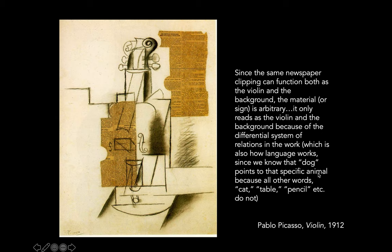So you know these are cut from the exact same newspaper page. But you read this one as background material within this picture, and you read this one as coming forward and part of the guitar. So even though they're the same thing, they're representing two different things in the painting.